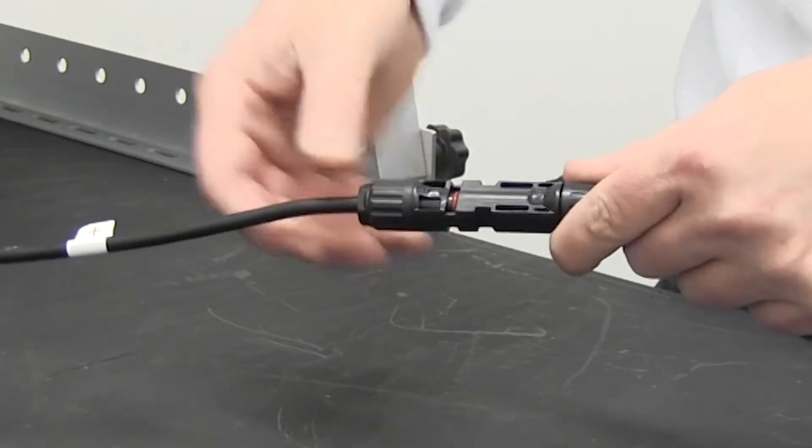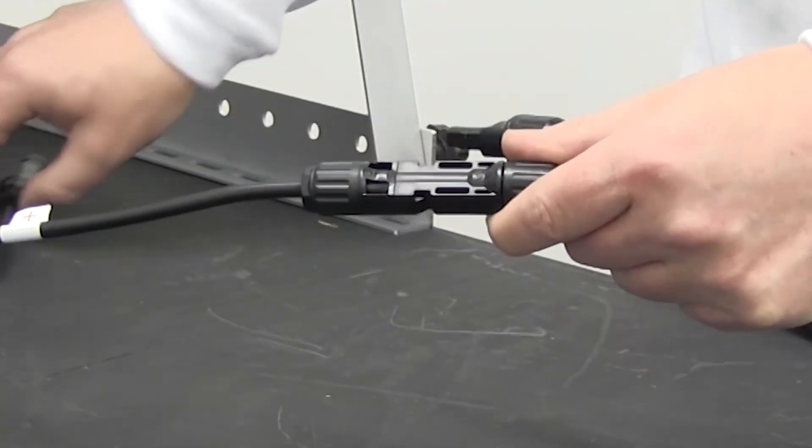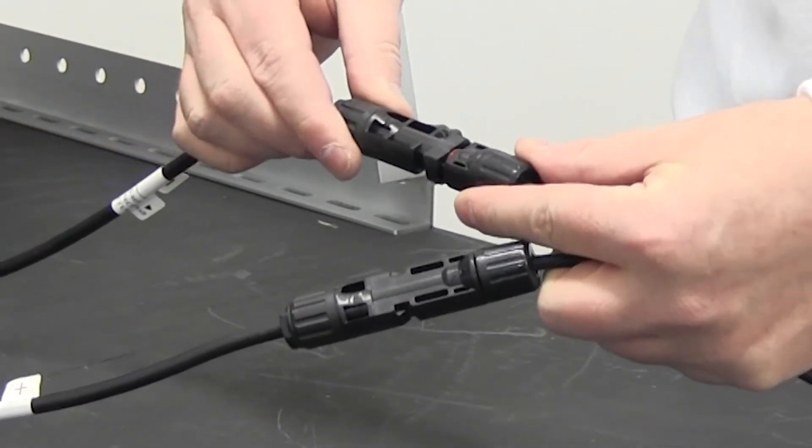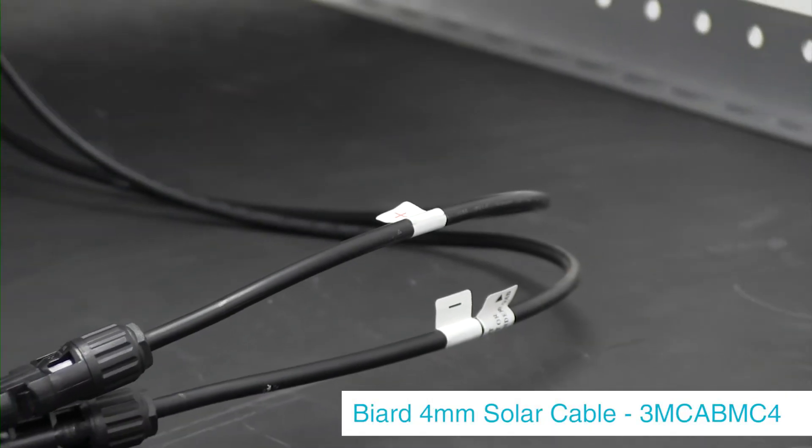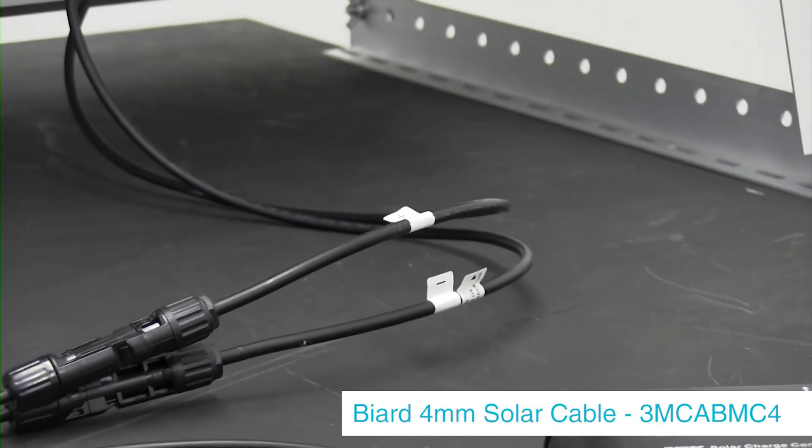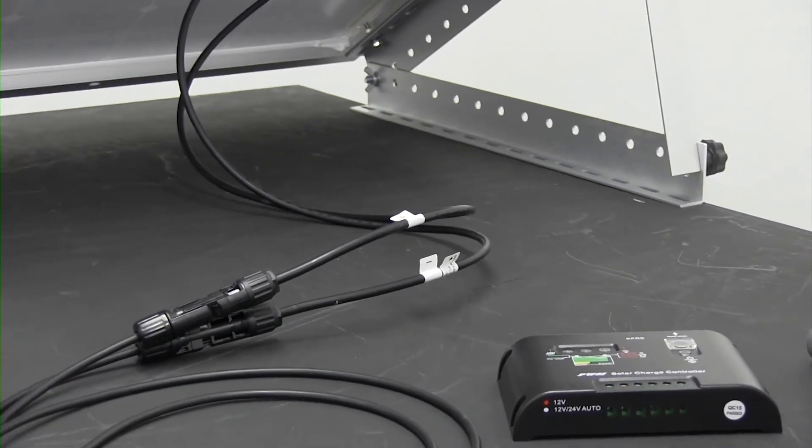Connect the male and female MC4s to wire up to your solar panel. We recommend the Biard 2x3 meter length of 4mm solar cable. These cables have male MC4s at one end and female MC4s at the other.